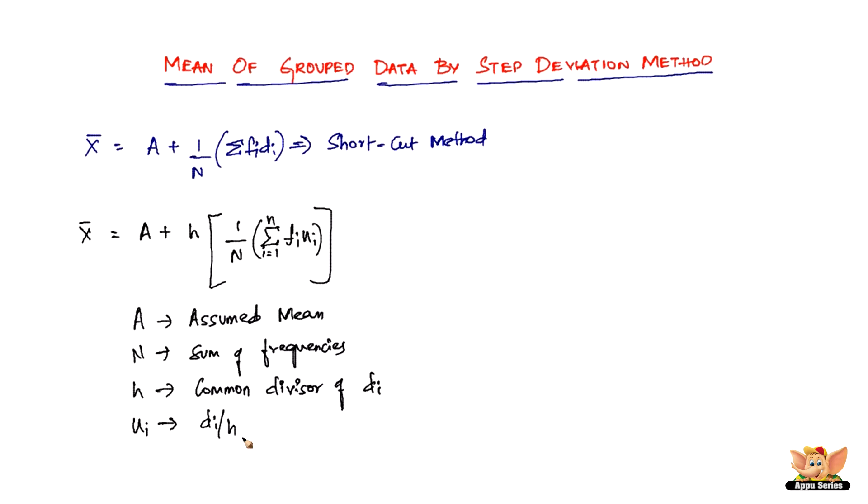So that's all the difference compared between the shortcut method and the step deviation method. There's just these two terms coming in: H and ui. The di is going to be there but it's not going to appear in the final formula, so di is taken off and then you've got ui and H.